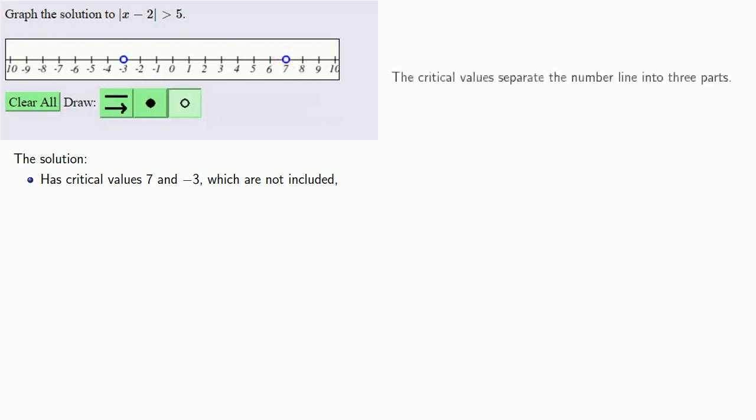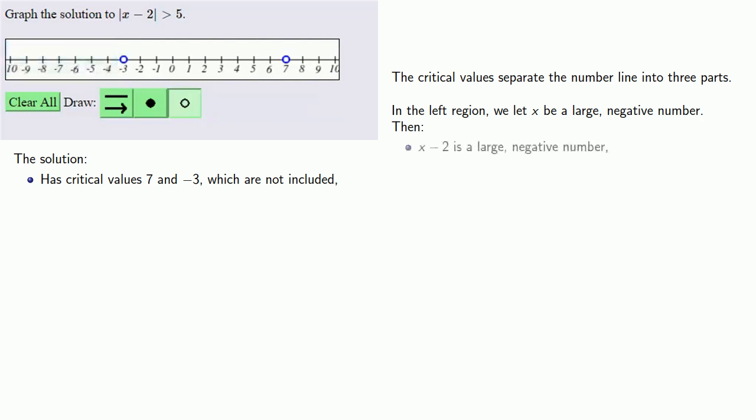The critical values separate the number line into three parts, so we'll test a point in each region. In the leftmost region, we'll let x be a large negative number. Then x - 2 is a large negative number.